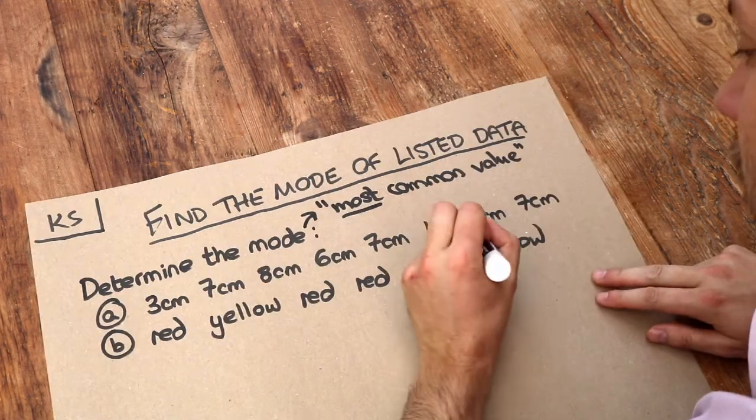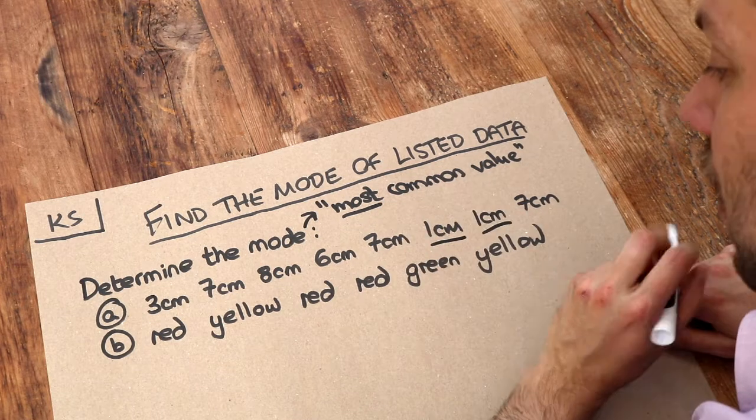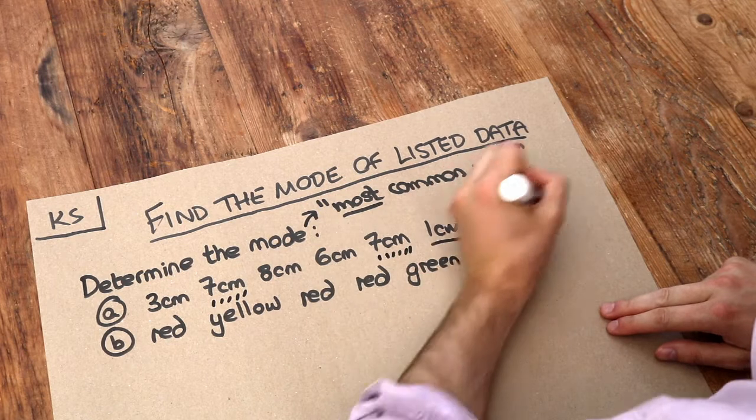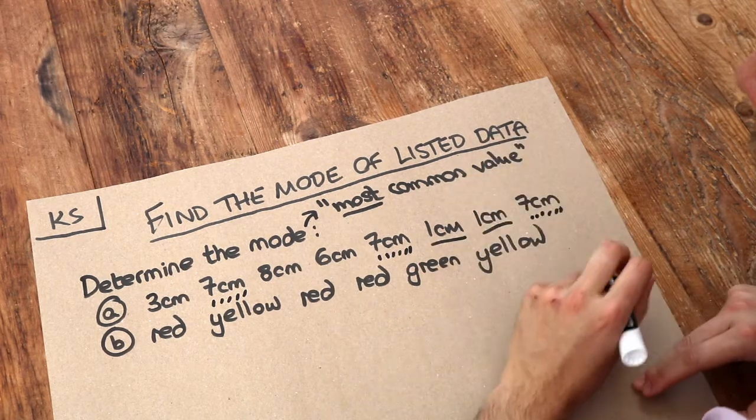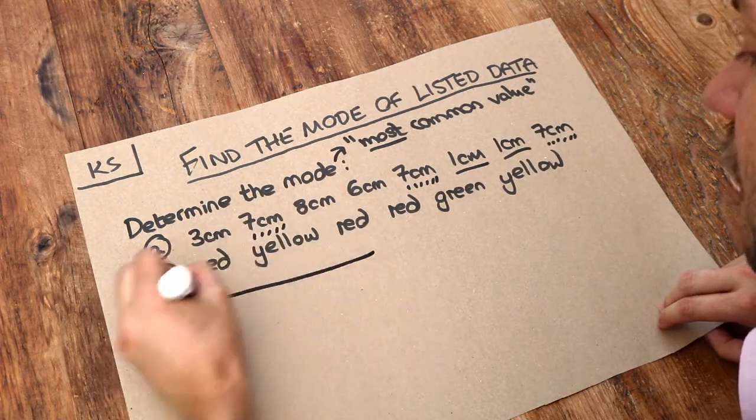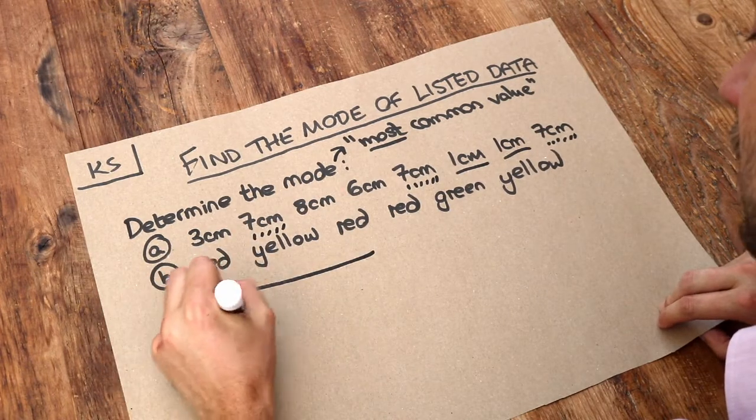Well we can see that the one occurs twice, but then seven occurs three times. Seven occurs here, here, and here. So therefore the most common value is seven centimeters. So the answer is seven centimeters, that is the mode.